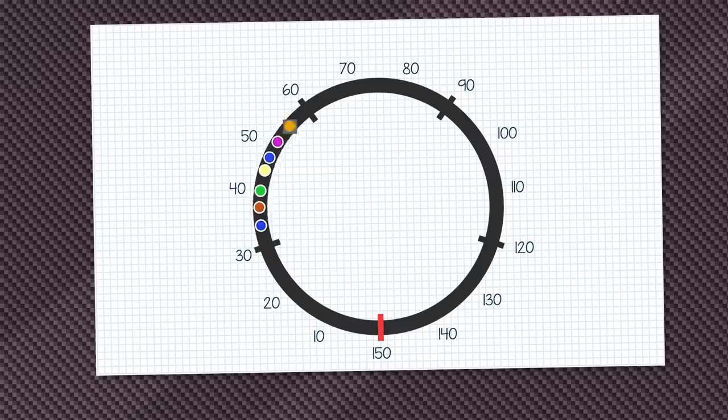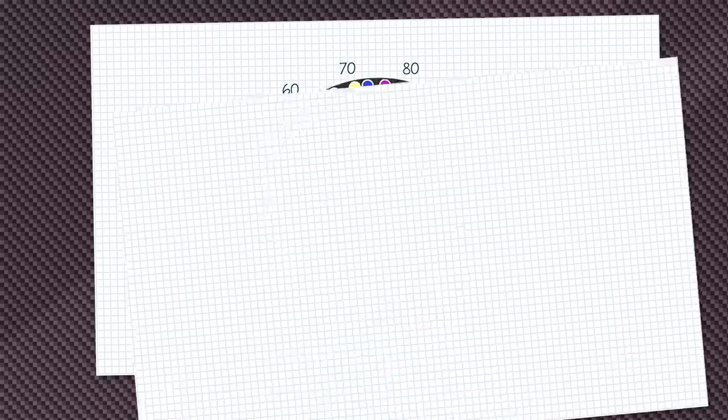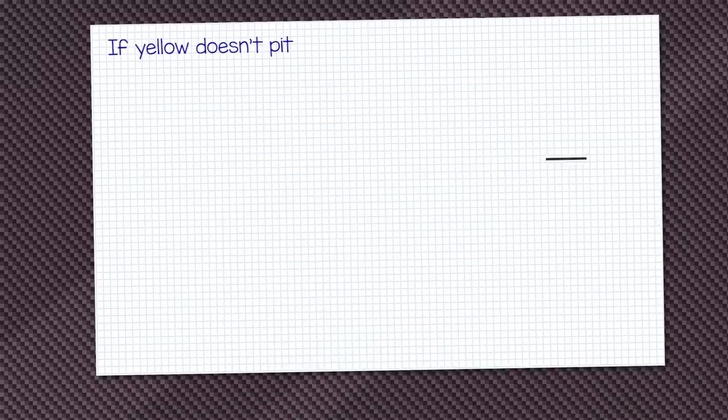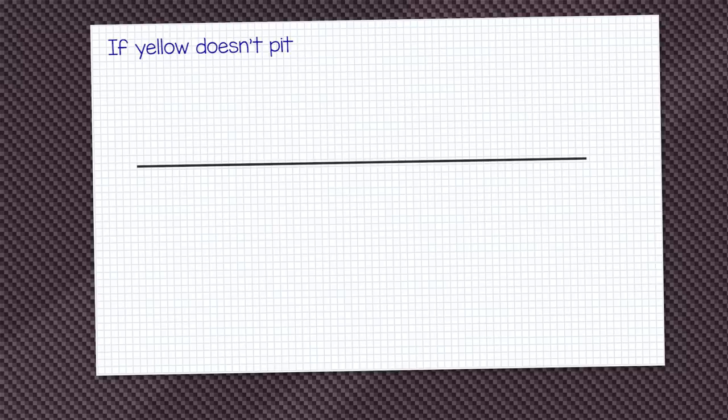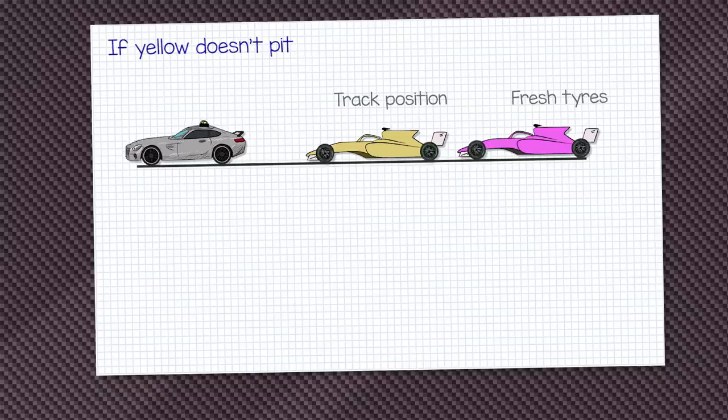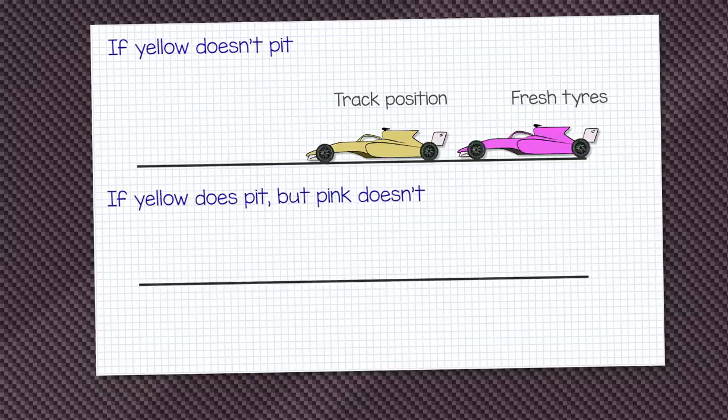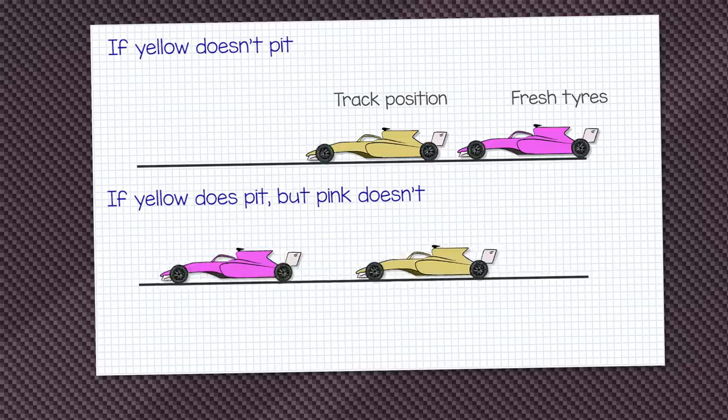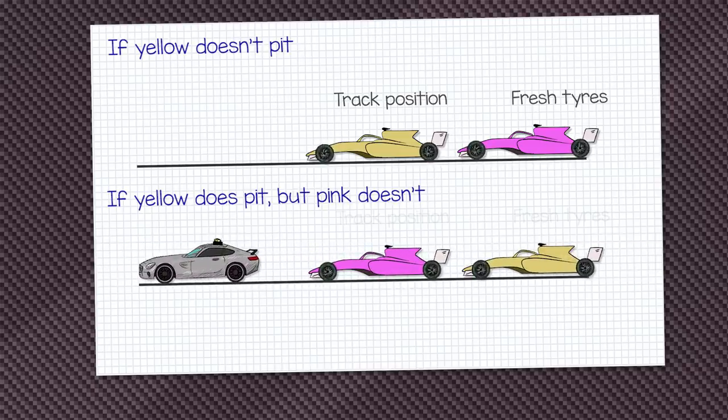Now the only worry pink might have is, what if yellow doesn't pit? What if it's in the last third of the race and the track is quite tricky to overtake on, so if pink pits and yellow doesn't, pink will then get stuck behind yellow once the safety car comes back in. Yellow is in a prime position here to do whatever pink doesn't do and pick a strategy to their own advantage.